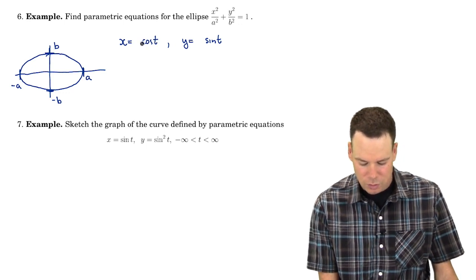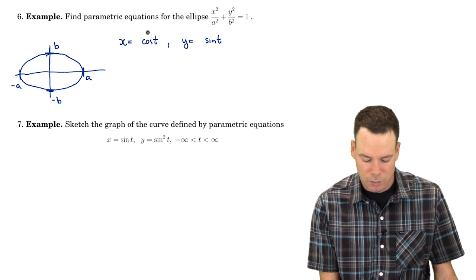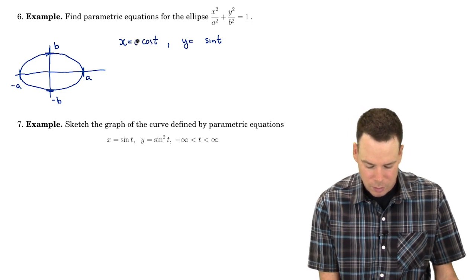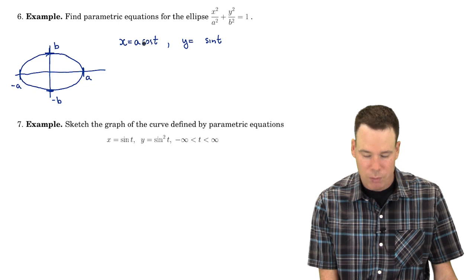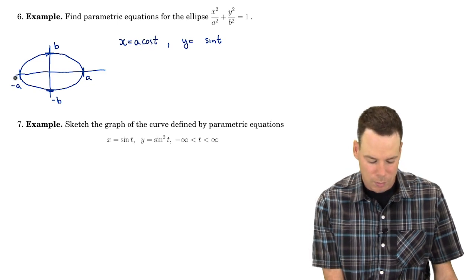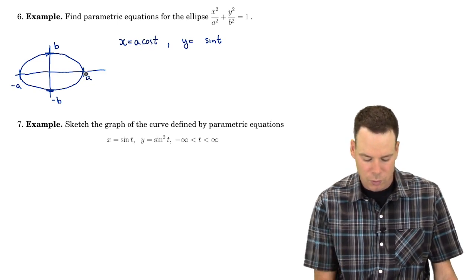So my cosine function, currently it goes from negative one to one. If I modify the amplitude of it, make it a, now it will reach as far back as negative a and as far forward as a.